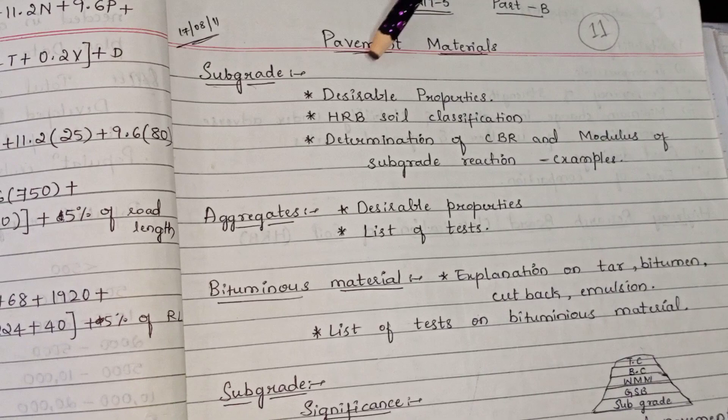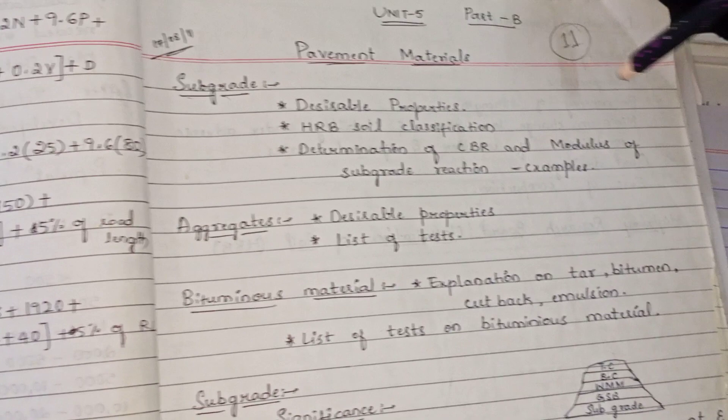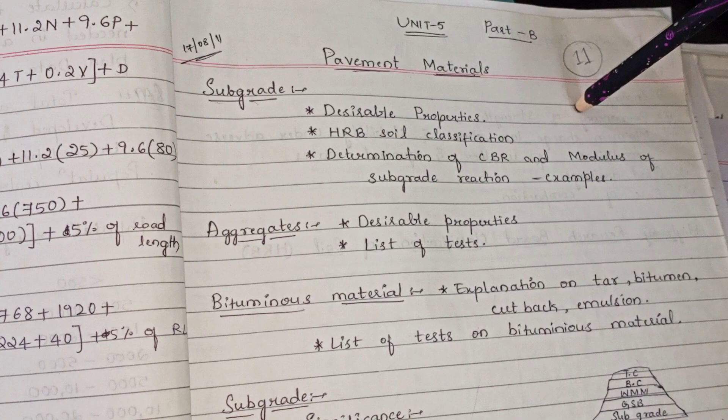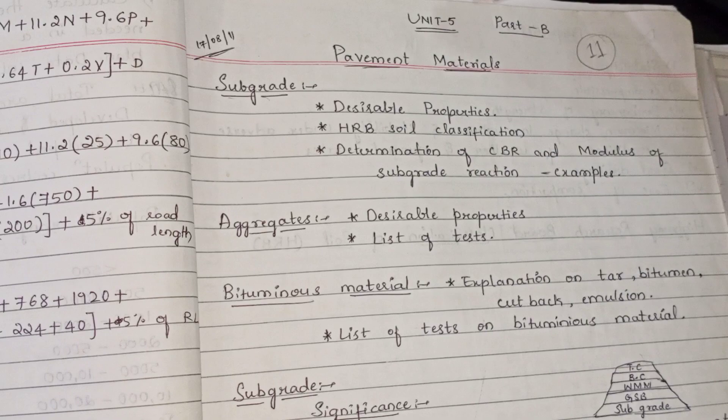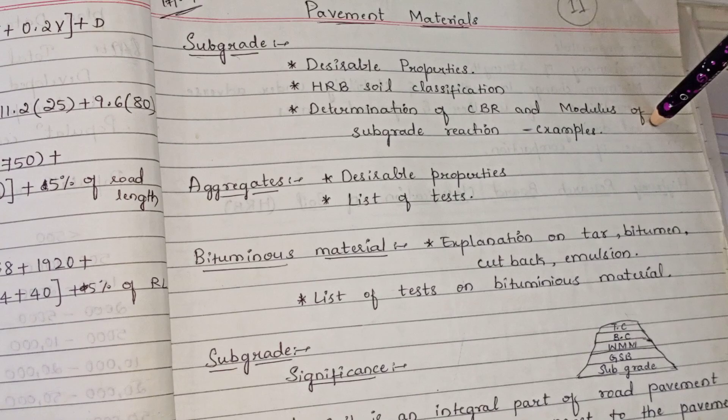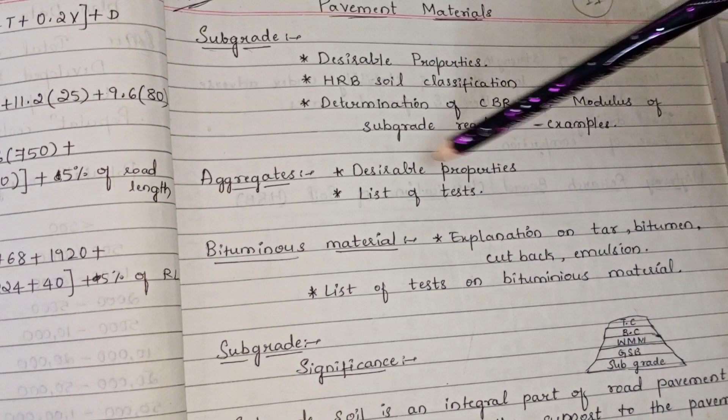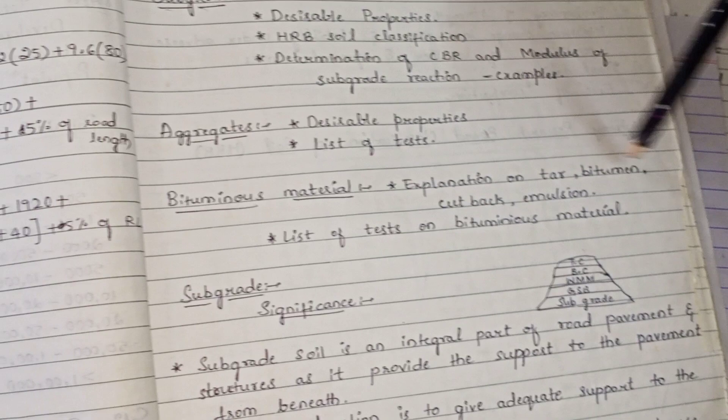Now, pavement material. In pavement material, you are going to see: subgrade soil and its desirable properties, HRB classification of soil, determination of CBR and modulus of subgrade reaction with examples, aggregates and their desirable properties, list of tests on aggregates, bituminous material with explanation on tar, bitumen, cutback, emulsion, and list of tests on bituminous material.